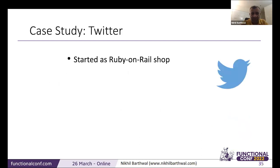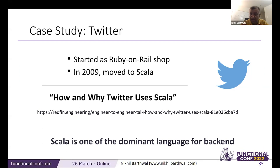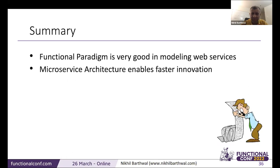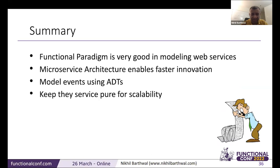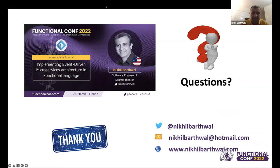As a case study, Twitter originally started with Ruby on Rails but moved to Scala. There's a link in the slides — it's a rather old link but still very relevant — about why Twitter uses Scala. They saw huge benefits and Scala became one of their dominant languages, alongside Java. To summarize: functional programming is great for microservices. Microservices enable faster infrastructure. Model events using ADTs, pure functions are great for services, and we've discussed all the benefits. Please feel free to reach out — my contact details, webpage, and Twitter handle are shown here. Thank you.